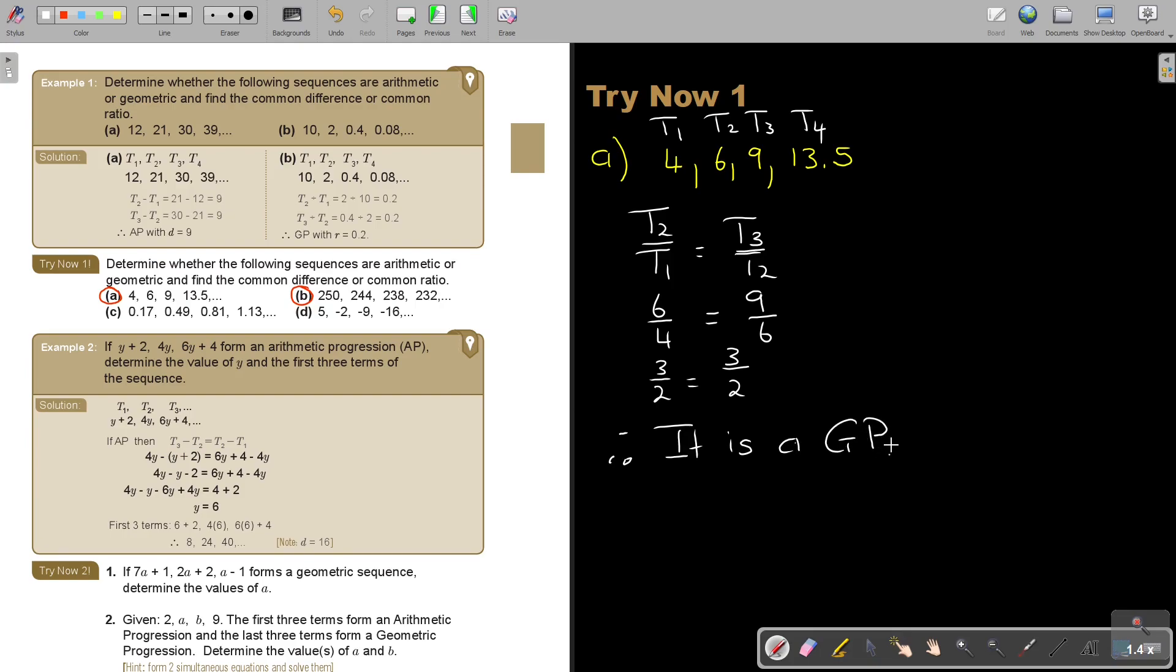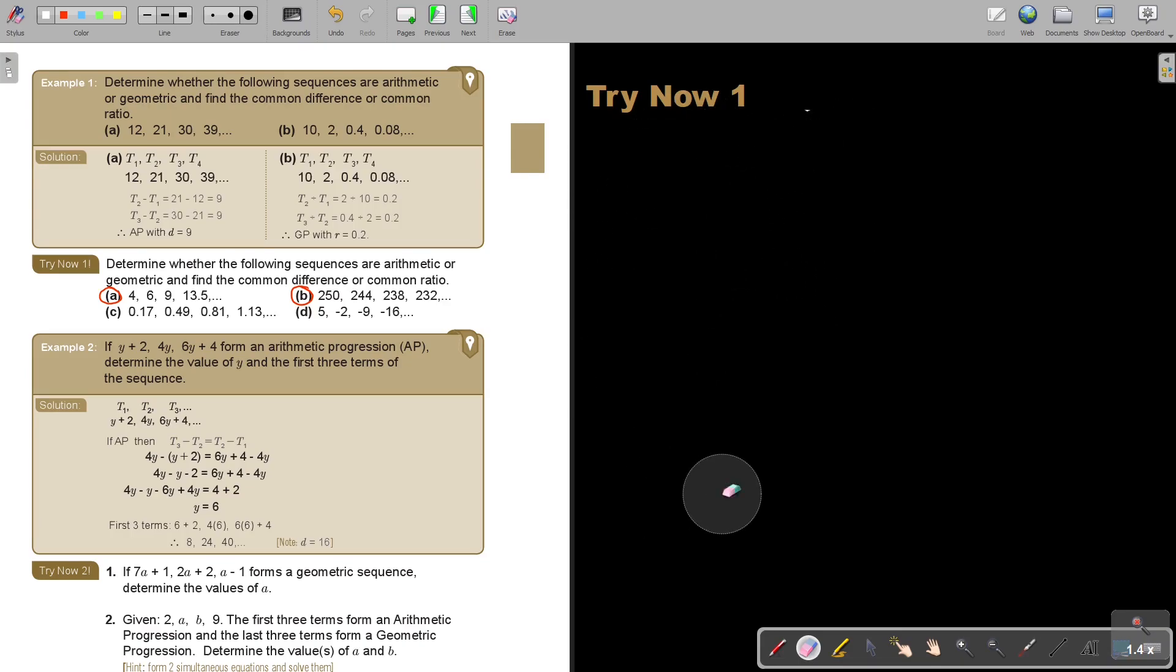Then, if you look at number B, and you can always do it both. But, I like first to write down the sequence. So, if I look at number B, the sequence is 250, and it's 244, and it's 238. It's always first good to test for an AP. So, let's test for an AP. T2 minus T1. And I'm just going to number it. This is T1. This is T2. This is T3. This is T4.